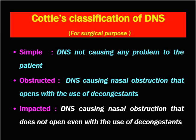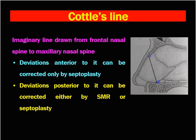This is all about Cotter's classification of DNS. Now let's move towards Cotter's line. Cotter's line gives an idea of doing either septoplasty or SMR surgery. Cotter's line is an imaginary line drawn from the frontal nasal spine to the maxillary nasal spine, from point A to point B. Deviations anterior to it can be corrected by septoplasty alone, and deviations posterior to it can be corrected by either SMR or septoplasty surgery.